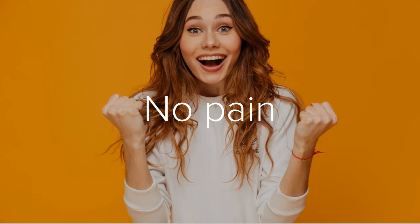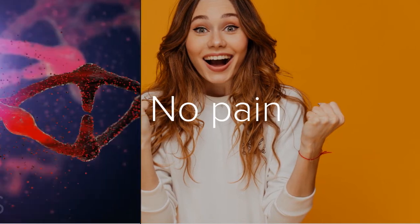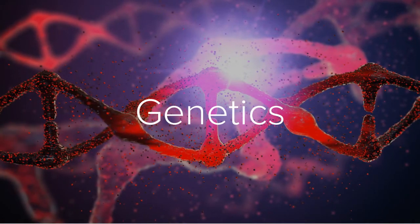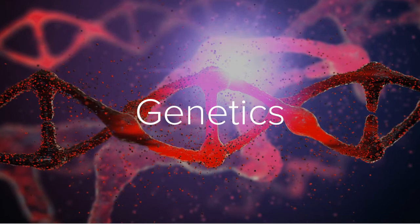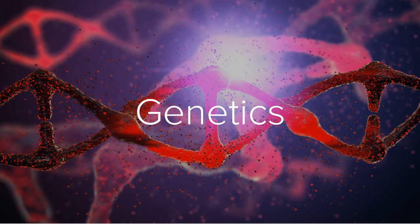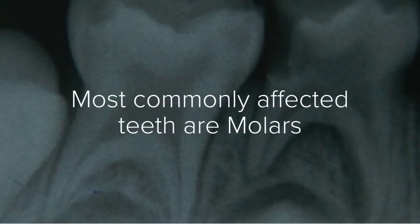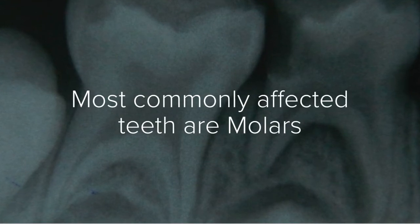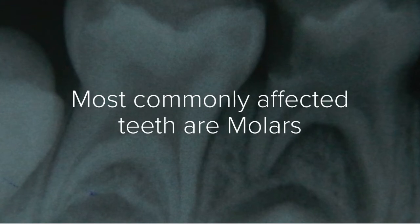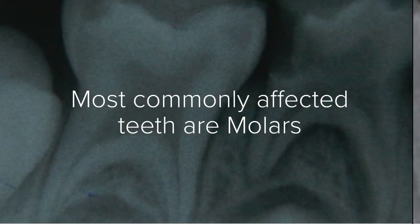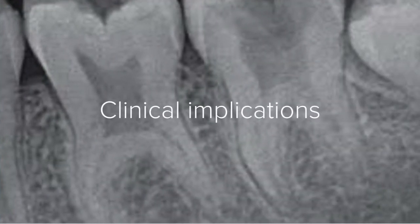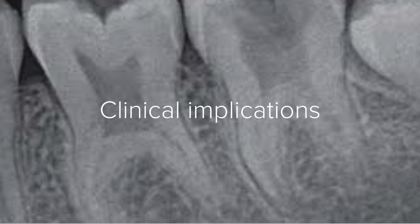The main cause behind this condition is genetics, which plays an important role. The most commonly affected teeth are molars — specifically, the permanent molars are affected. But in pictures, rarely you can also see the deciduous molars are affected. The clinical implication is that since you have a big pulp chamber, caries can invade the pulp earlier than in a tooth with normal size.